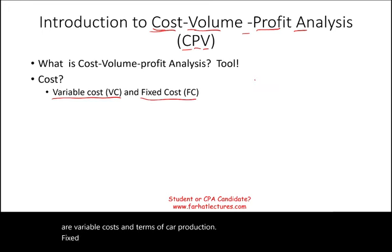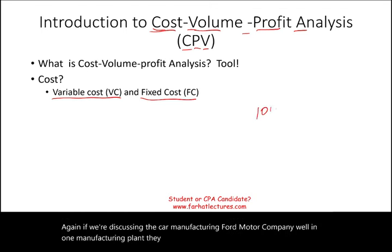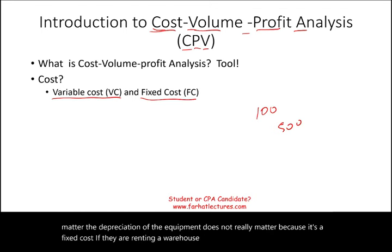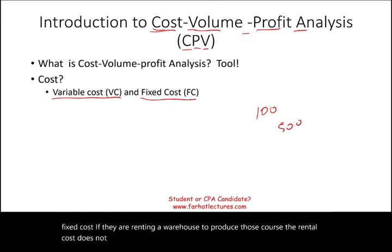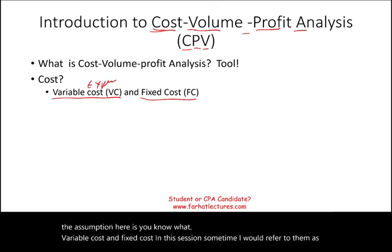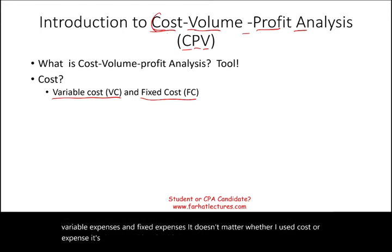Fixed cost is a cost that does not change with production. In car manufacturing — take Ford Motor Company — in one plant they might produce 100 cars or 500 cars. It doesn't matter; the depreciation of equipment is a fixed cost. If they're renting a warehouse, the rental cost does not change — it's fixed. In this session, I may refer to them as variable expenses and fixed expenses; cost and expense mean the same thing.